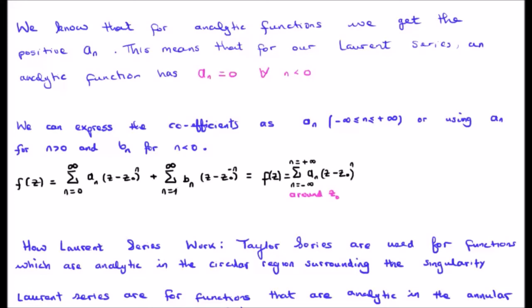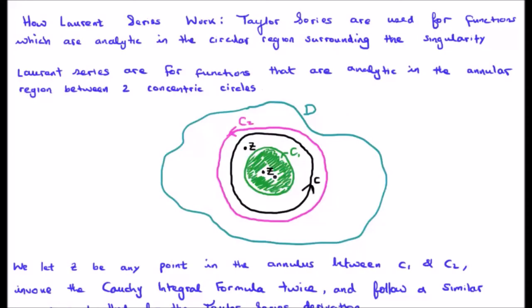Why is this useful? Don't worry, it's something we're going to address very shortly. Taylor series is used for functions which are analytic in a circular region surrounding the singularity. Laurent series are for functions that are analytic in an annular region between two concentric circles. Looking at our domain D, we have our pole z_0, and two paths: c2 in pink and c1 in green, forming an annular region — kind of like a donut.